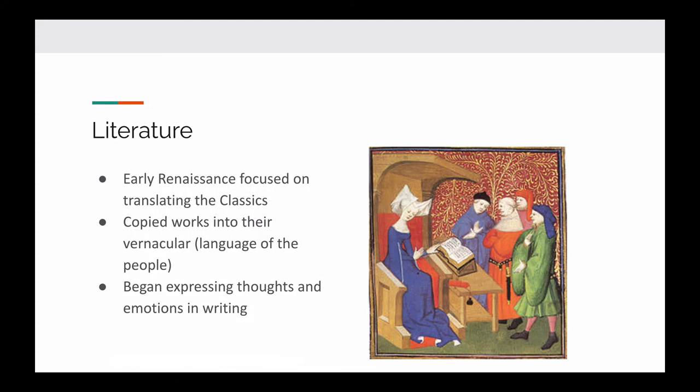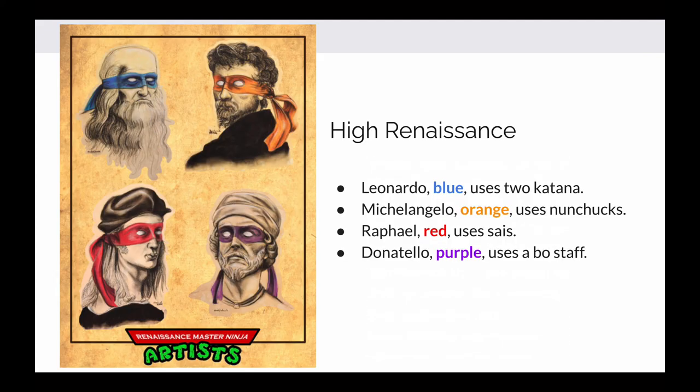Literature is no different. The early Renaissance focused on translating the classics to expose that work to as many people as possible — translating it into the vernacular, the language of the people. And when it came to their own writing, they started expressing their thoughts and emotions. We're starting to see tone. Your language arts teachers talk often about how you can tell somebody's writing just from reading it because you can hear that person. This is what's coming to us during the Renaissance, and now this is the High Renaissance — the peak.